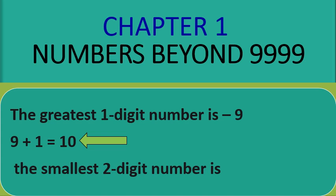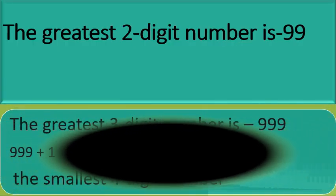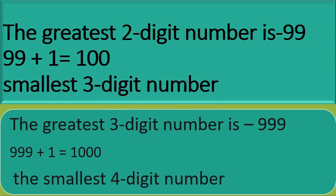The greatest 1-digit number is 9. 9 plus 1 is equal to 10, so the smallest 2-digit number is 10. The greatest 2-digit number is 99. 99 plus 1 is equal to 100, so the smallest 3-digit number is 100.